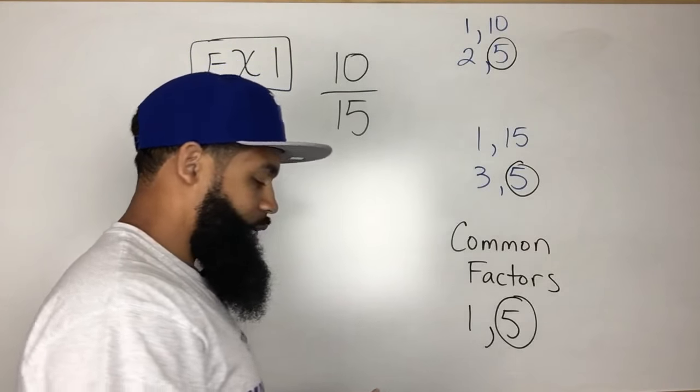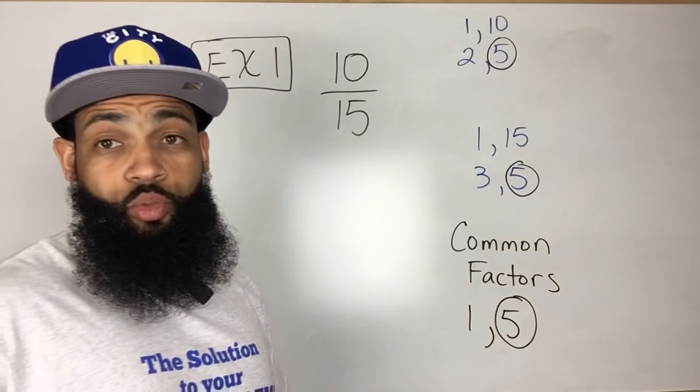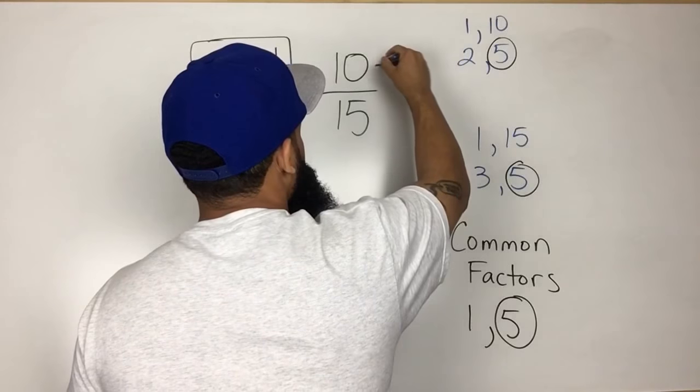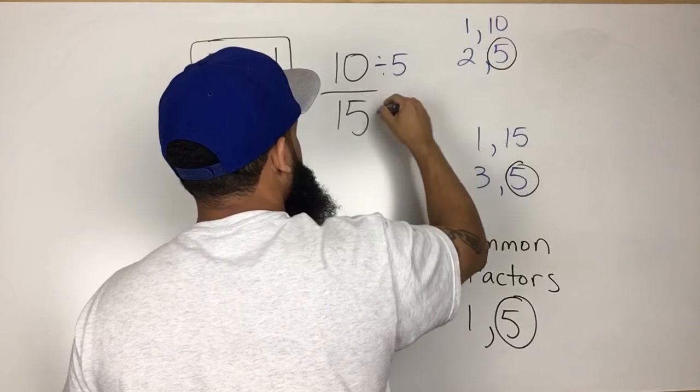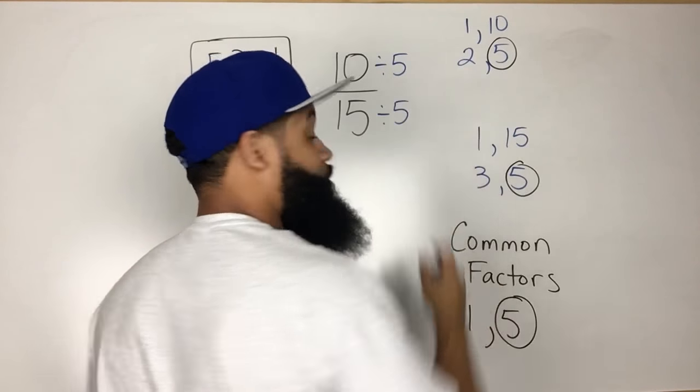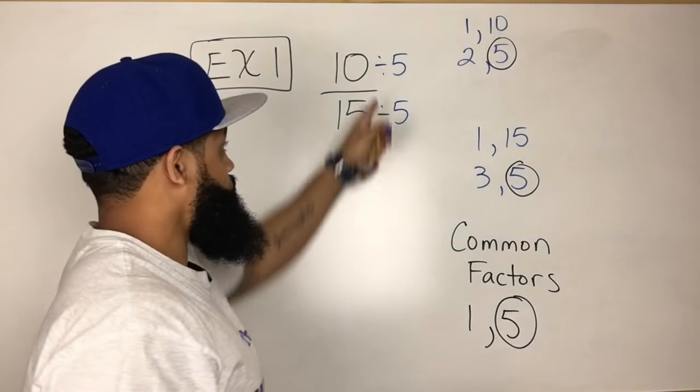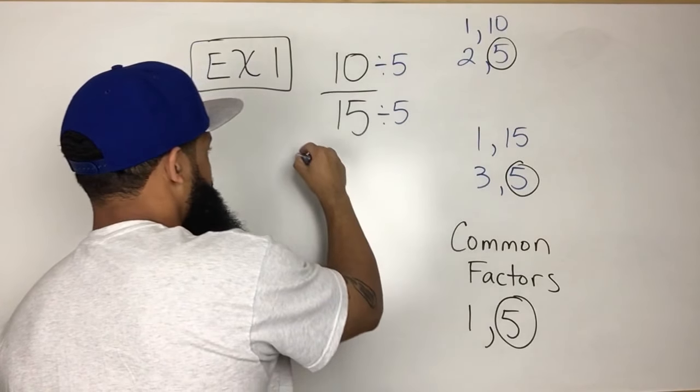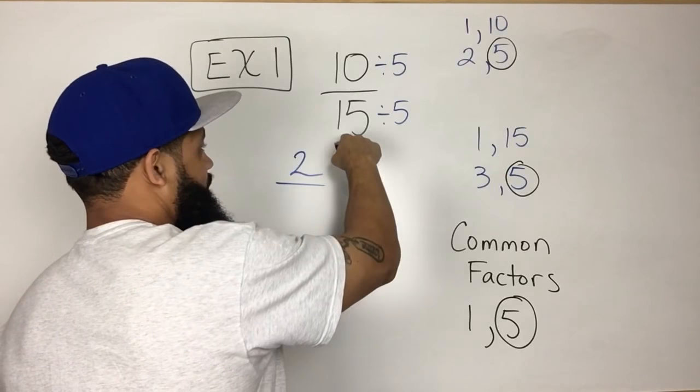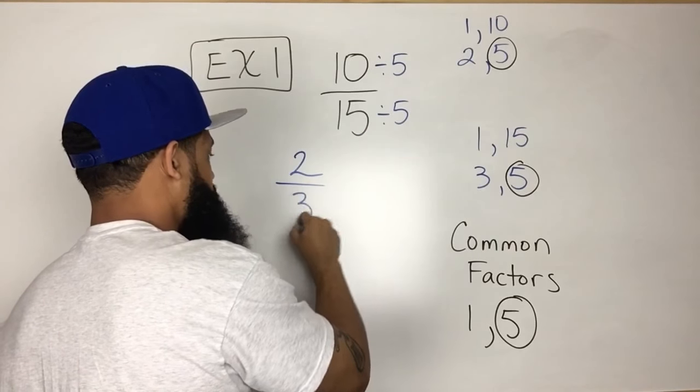So if I take and I divide these numerators and denominators by 5, because remember, whatever you do to the numerator or fraction, you have to do to the denominator. So 10 divided by 5 equals 2 and 15 divided by 5 equals 3.